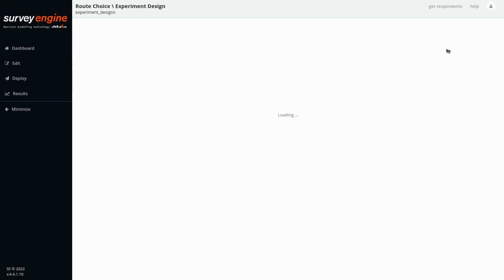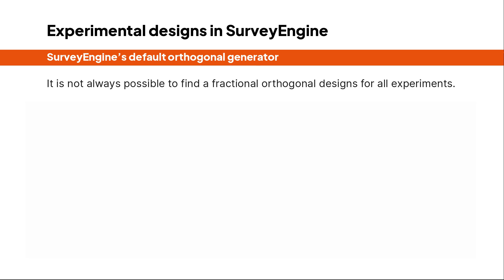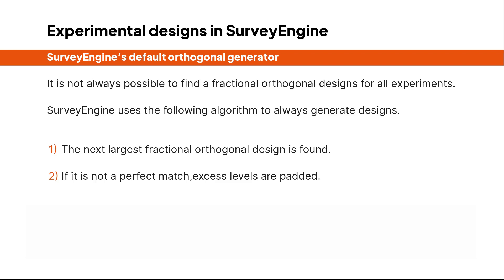The easiest operation is just to click 'Generate Orthogonal Design.' A small caveat: this may not always be a pure and perfect orthogonal design — it's actually a padded design. It's an unfortunate mathematical reality that not all X matrices can produce perfect orthogonal designs. So the design generator in Survey Engine finds the next largest perfect orthogonal design and then pads those excess levels with levels that are from your valid ranges.